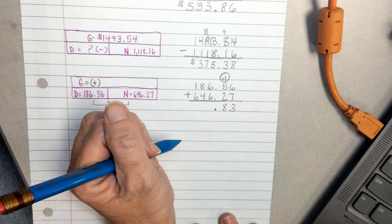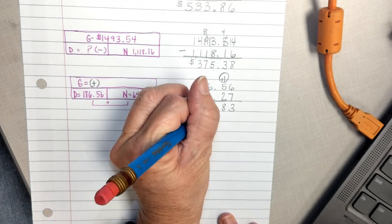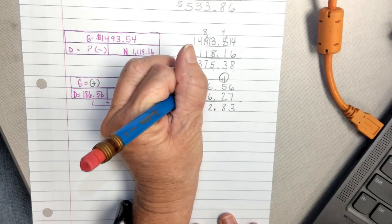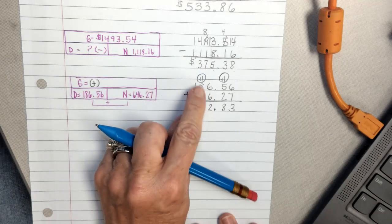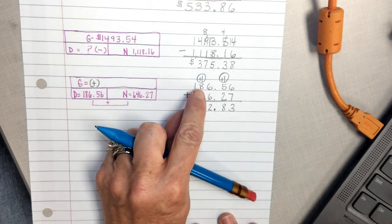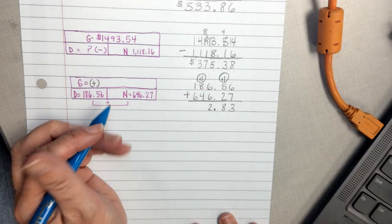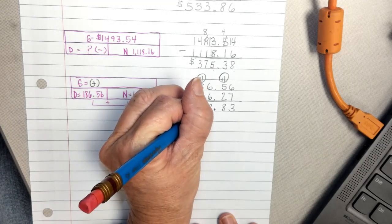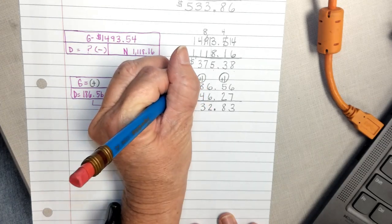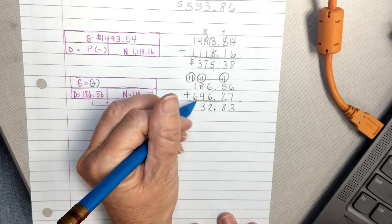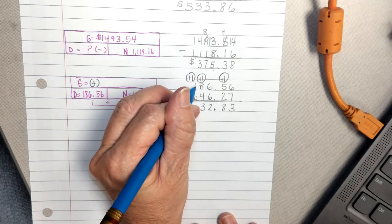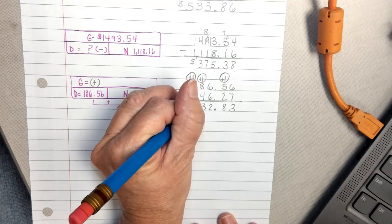6 plus 6, well that's a double, and that gives me 12. Regroup the 1 to the next place value, the tens place. 8 plus 4 is 12, plus 1 more gives me 13. So write your 3 and carry your 1. And 6 plus 1 is 7, plus 1 more makes 8.